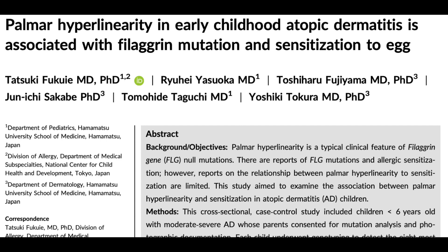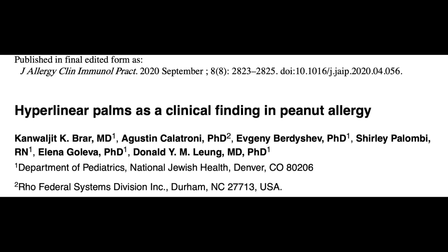The authors suggested that palmar hyperlinearity indicated a possible inherited barrier abnormality of the skin in early childhood. Its identification may help to predict a more accurate prognosis such as sensitization to certain foods. In another study published last year, an association between hyperlinear palms and peanut allergy in children with atopic dermatitis was observed, and this association was seen regardless of atopic dermatitis severity.